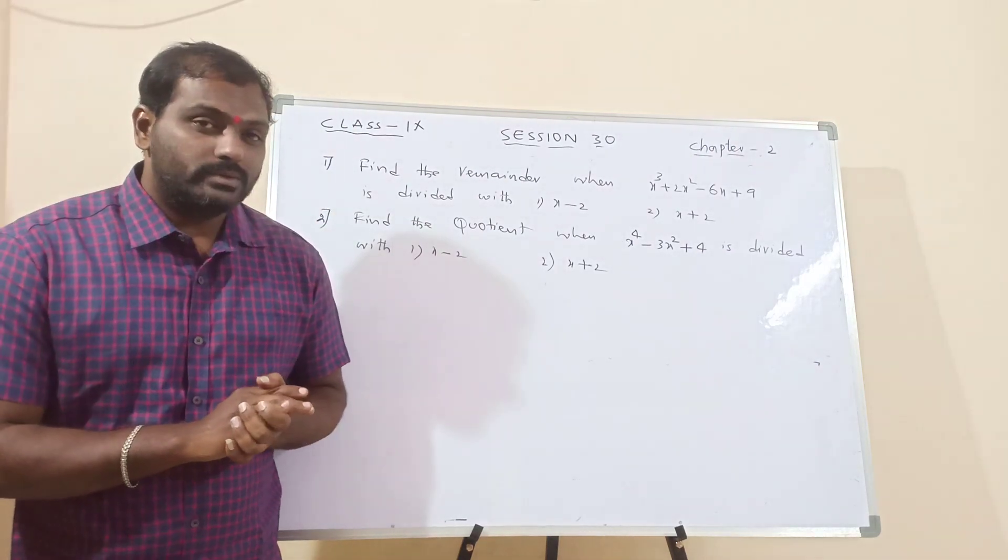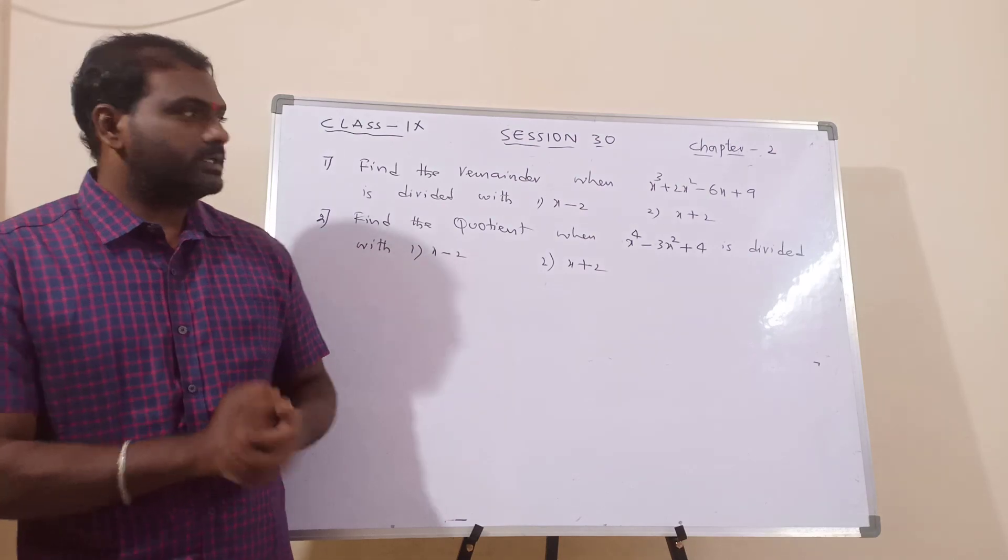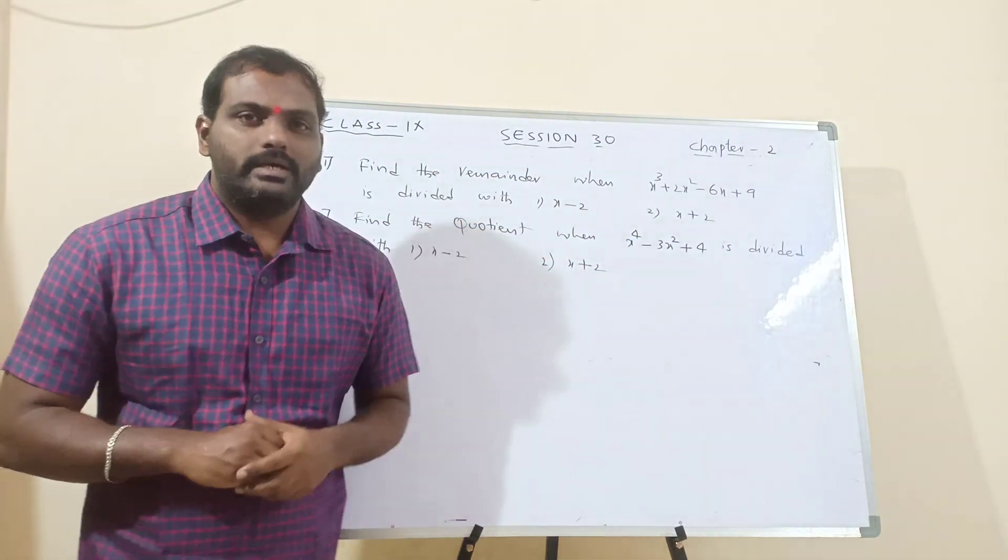So, what will become x minus 2? x minus 2 is equal to 0, x is equal to 2. That means, what we have to find it out? We have to find it out p of 2.